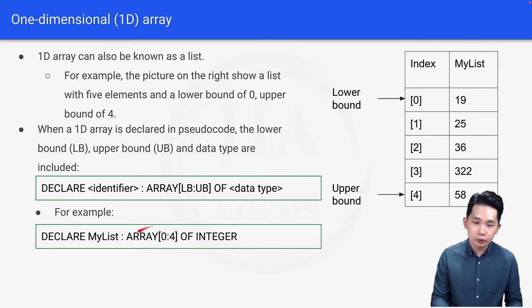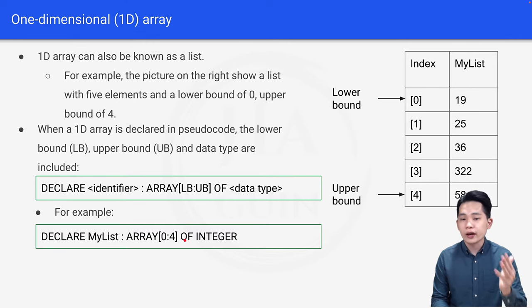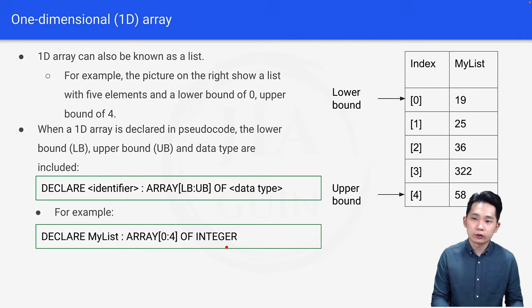Which means that this array will have 5 elements: 0, 1, 2, 3, and 4. So this is how we can declare the array on the right here.